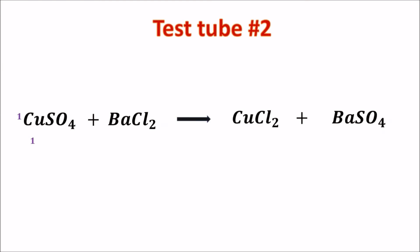Let's check if the equation is balanced. We have 1 copper on each side, 1 sulfate on each side, 1 barium on each side, and 2 chlorine on each side. This is the balanced equation for test tube number 2.